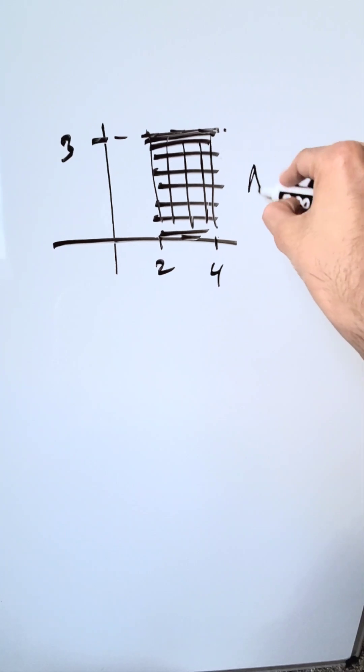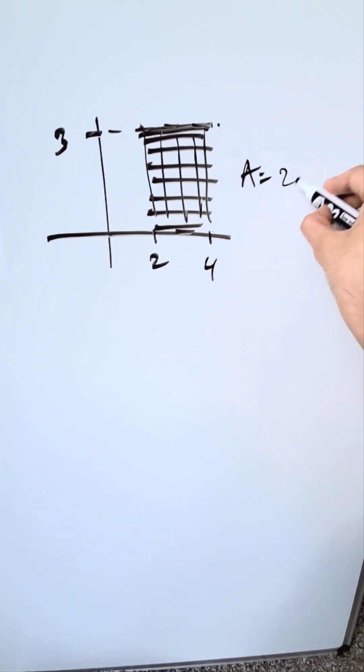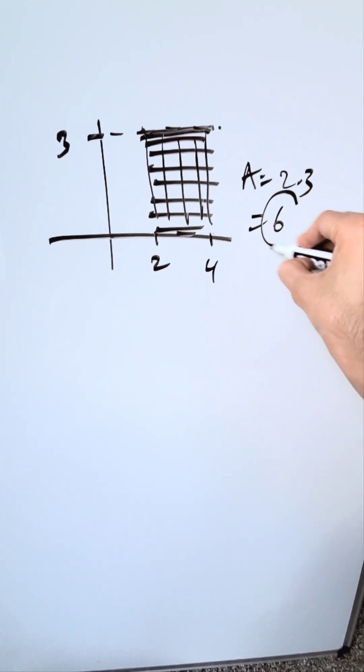Your geometric approach is easy. You're doing length times width, 2 times 3, and you know it's equal to 6.